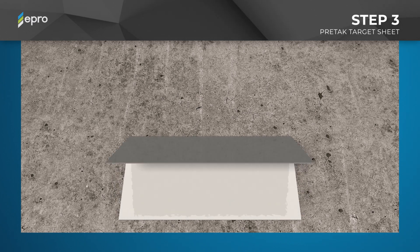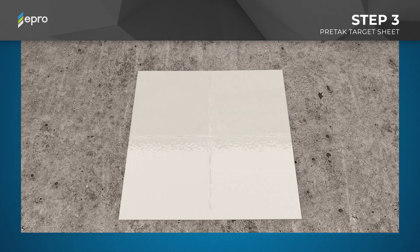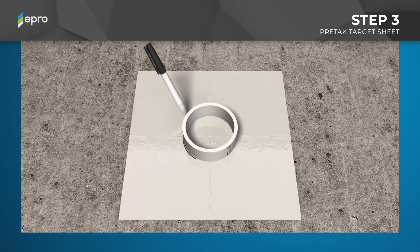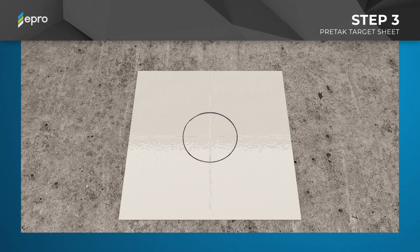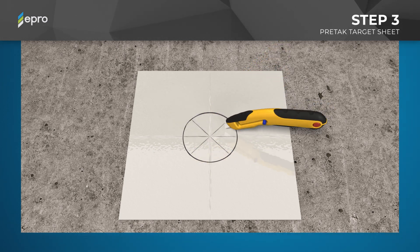Next, fold the 12-inch square in half twice to find the center of the target sheet and remove the clear release liner. Using a spare piece of the 4-inch pipe as a template, place it in the center of the target sheet and trace a circle around the pipe with a permanent marker. Then, use a utility knife to make two X-shaped cuts within the drawn circle through the center of the target sheet.